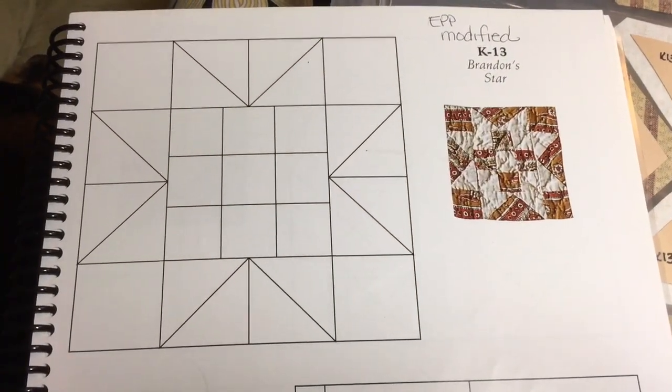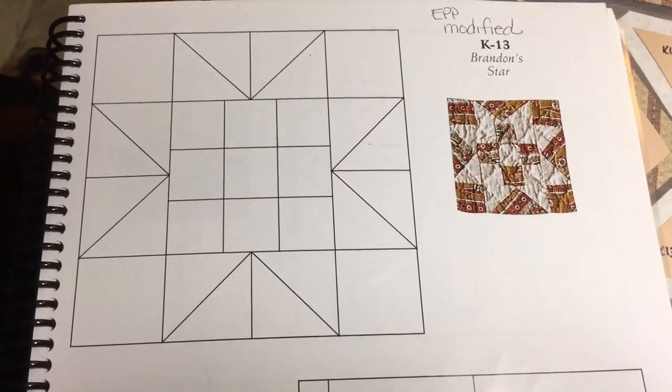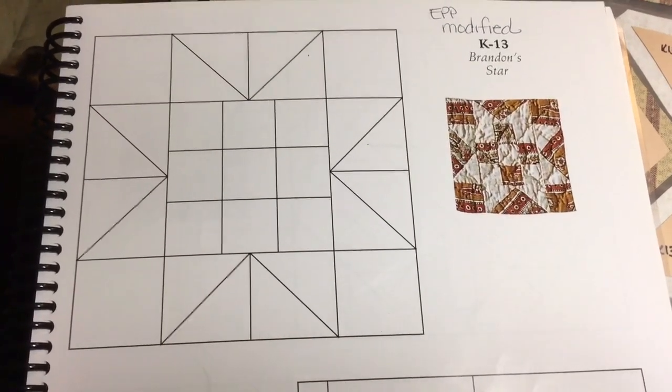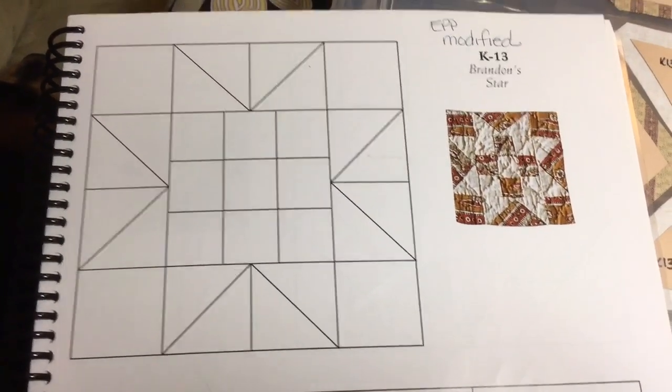Now we begin K13, and K13 is the very last block of the 11th row of the quilt, two rows left after this.